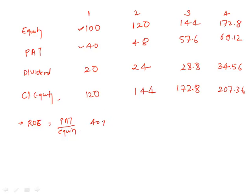So 40 divided by 100 which is 40 percent. 48 divided by 120, how much? 40 percent. That's how we calculated it, isn't it? So every year we set up profit equal to 40 percent of opening equity, so we have kept ROE as a hypothetical 40 percent.